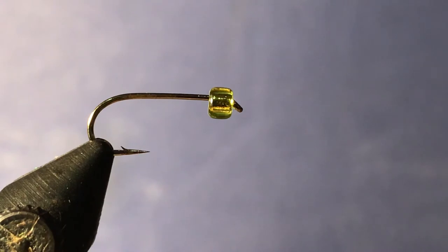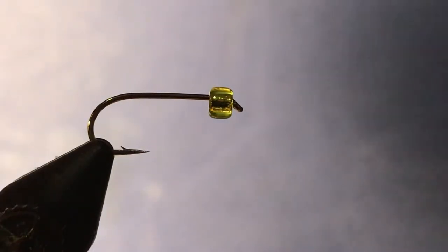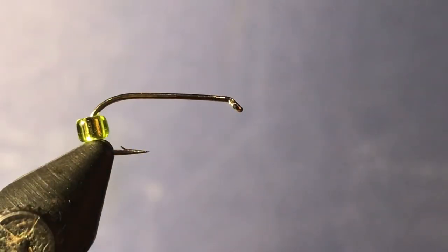This one uses a peacock hurl and a yellow transparent bead, a bit different to the usual one some people tie. So what we're going to do, we previously tied this fly and I've had lots of problems with this bead sort of sliding up and down or even sliding off.